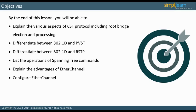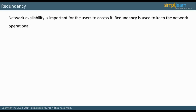Let us discuss the underlying reason for spanning tree: redundancy. Network availability is important for users to access the network. Redundancy is used to keep the network operational. There are different types of redundancy.